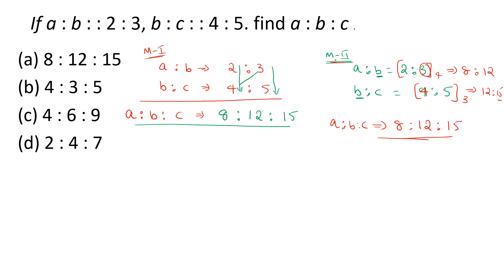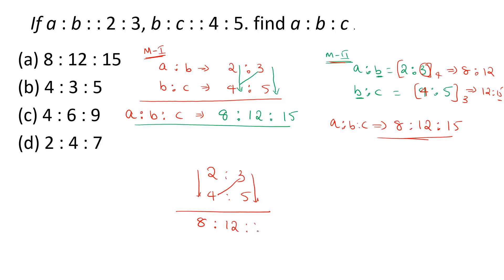There are many methods to do these type of questions, but these two are most helpful in saving time. Using Method 1 — since A:B is given and B:C is given — we need A:B:C. Rewrite the two ratios: 2:3 and 4:5. To get A multiply 2 with 4 = 8; to get B multiply 3 with 4 = 12; to get C multiply 3 with 5 = 15. So the answer is 8:12:15, which is option A.